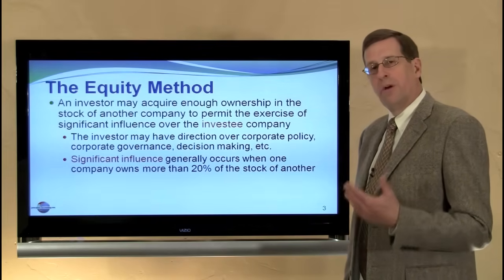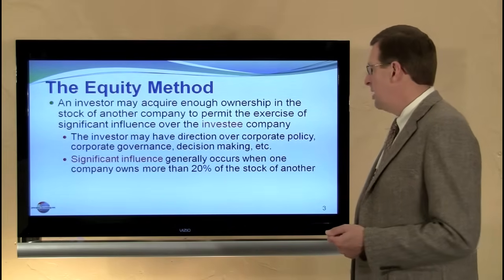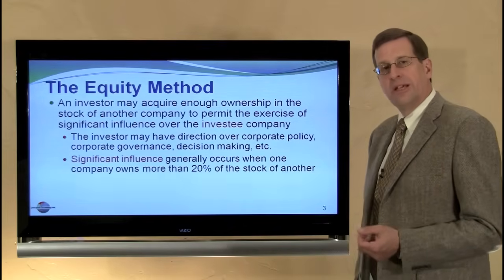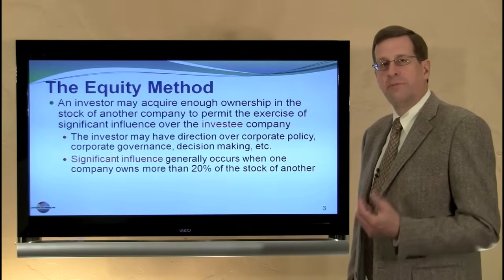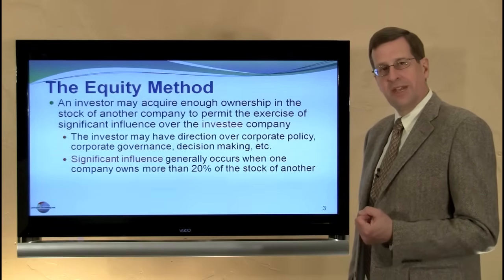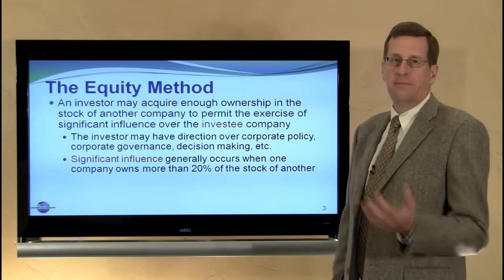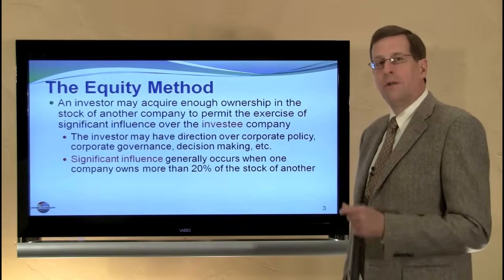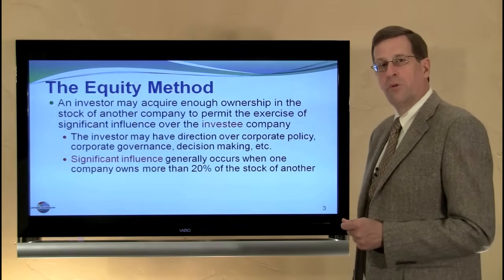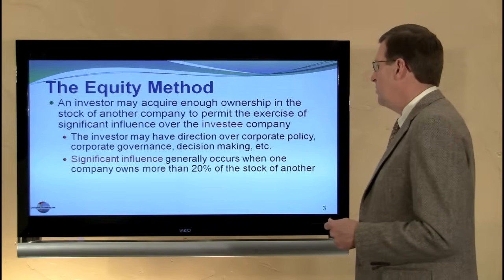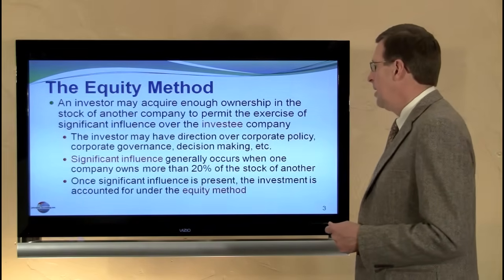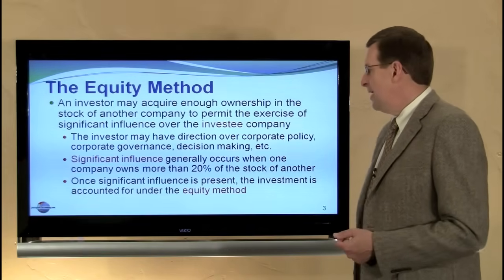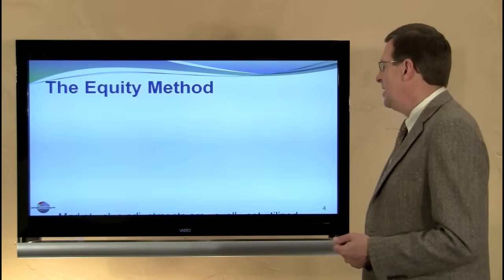As a general benchmark, we look for 20% or more ownership for the presence of significant influence, but the ultimate test is significant influence. That might occur with an investment of less than 20%, or it may fail to occur with an investment greater than 20%. Once significant influence is present, we opt for the equity method of accounting.